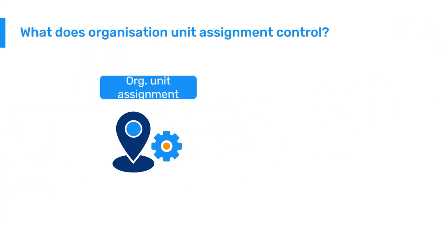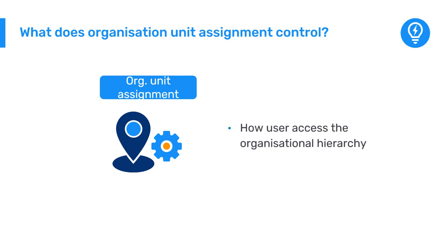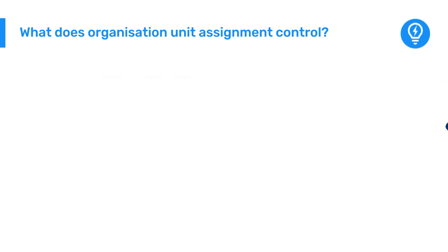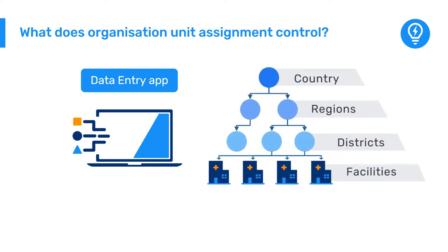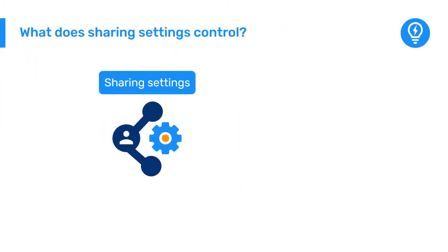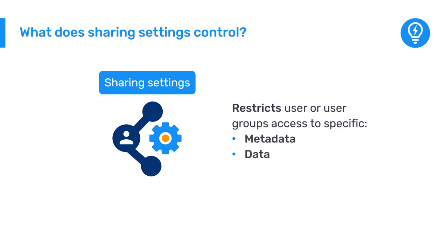The second layer, organization unit assignment, controls users' access to the organizational hierarchy. For example, in the data entry app, users can only enter data for the organization unit they are associated with and the organization units below it in the hierarchy. The third layer, sharing, provides more granular control and restricts a user or user group's access to specific metadata and data in the DHIS2 system. These controls are managed through the sharing settings feature.